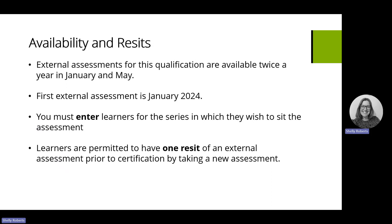External assessments for this qualification are available twice a year — in January and May. The first one was assessed in January 2024 and so on. When you plan your course, depending on the delivery model and what sitting works well, you need to enter your learners into the series. Make sure your exams office has let Pearson know who's sitting and how many papers you need. Learners are permitted one resit — if they don't pass the first time they can have a resit later on. Some people do the January sitting so they can resit in May.